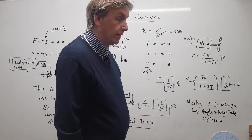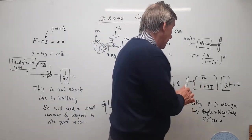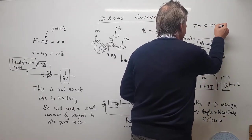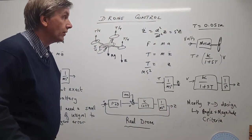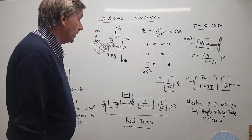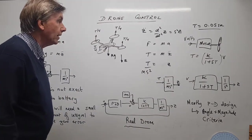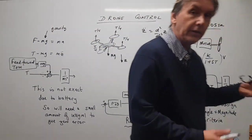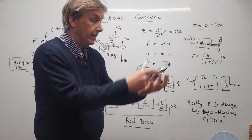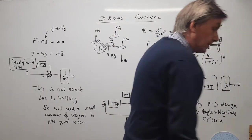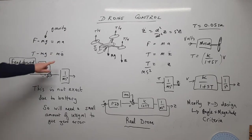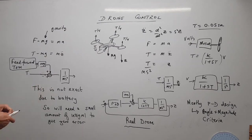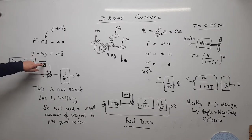T is quite small — those motors respond very quickly when you increase the voltage. I've found T for these motors to be 0.05 seconds, so they can increase speed in about 50 milliseconds, which is quite quick. One important point for the real application is that the drone is in a gravity field, so if you drop it, it falls. We get mg pulling it down, so the equation becomes: T minus mg equals m·z-double-dot.